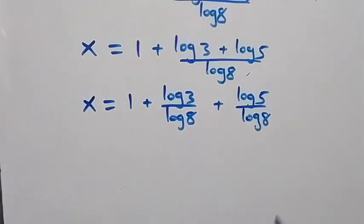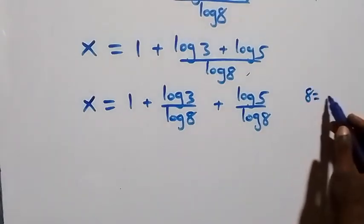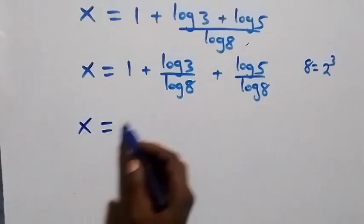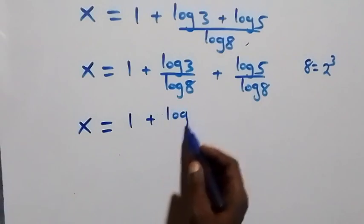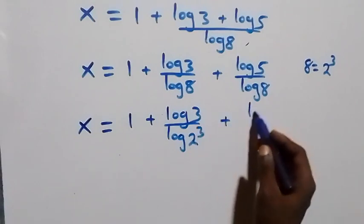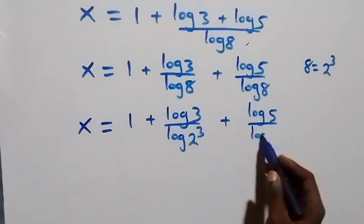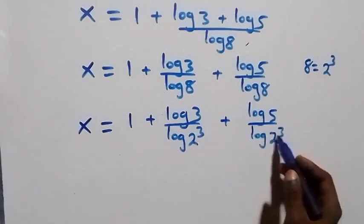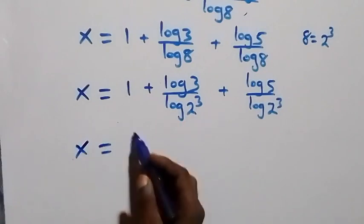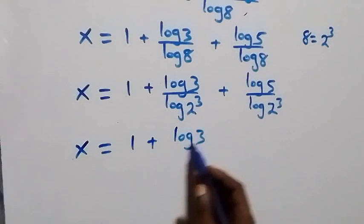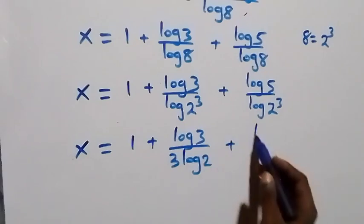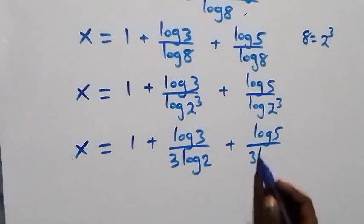We rewrite 8 as 2 times 2 times 2, which is 2 raised to power 3. So x equals 1 plus log 3 over log(2³) plus log 5 over log(2³). Applying the power law, 3 comes out front: x equals 1 plus log 3 over (3·log 2) plus log 5 over (3·log 2).